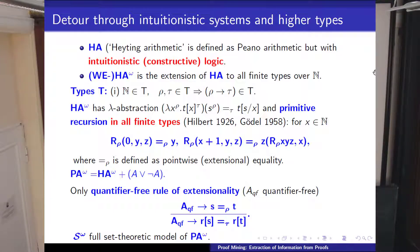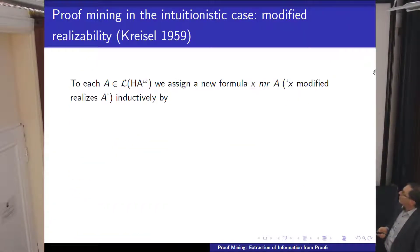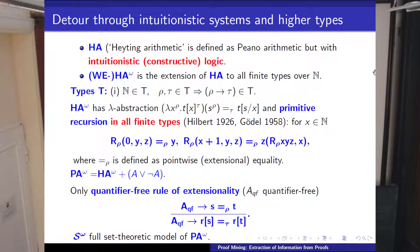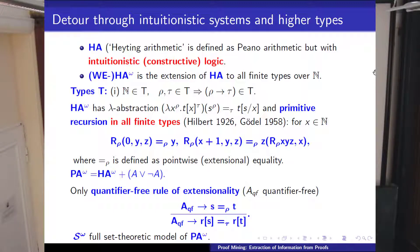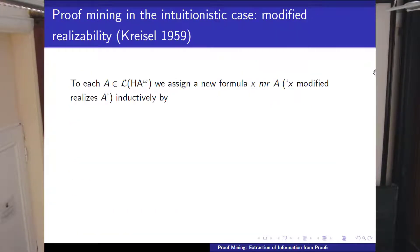What we have, however, is a rule of extensionality—so if you can prove things to be equal, then this will be respected. The obvious model for this is the type structure of all set-theoretic functionals. There are other interesting type structures of all continuous functionals, and another one of all so-called majorizable functionals in the sense of Howard and Weissel, but let's stick here to the full model.